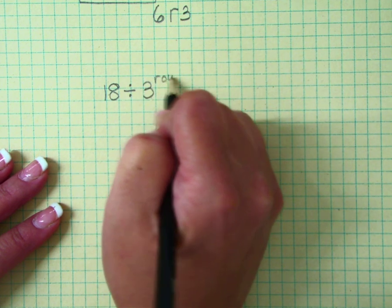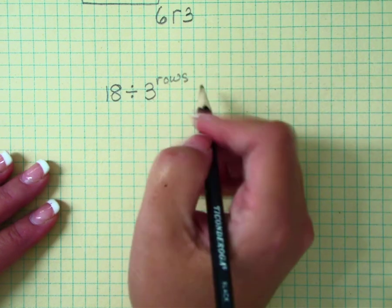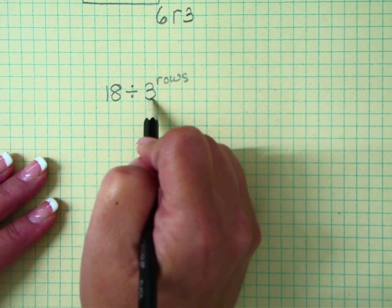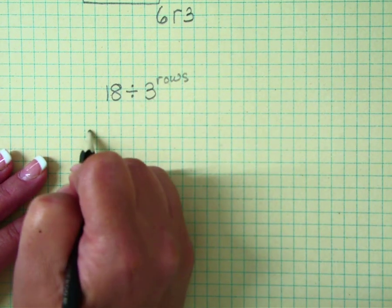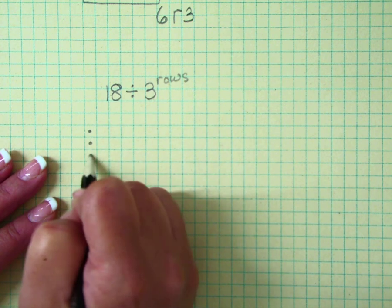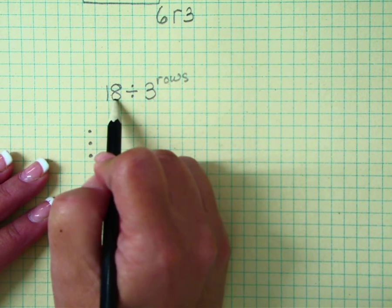The divisor tells us how many rows to make, so we're going to make three rows: one, two, three. And we have 18 of something that we need to disperse in these three rows.